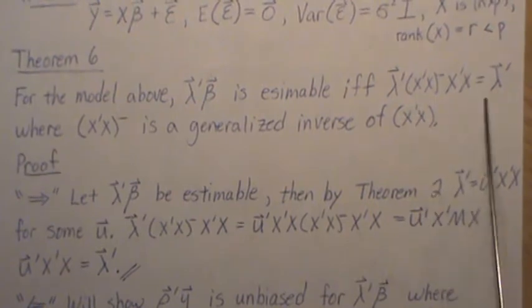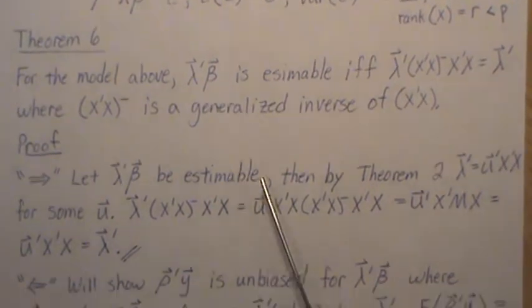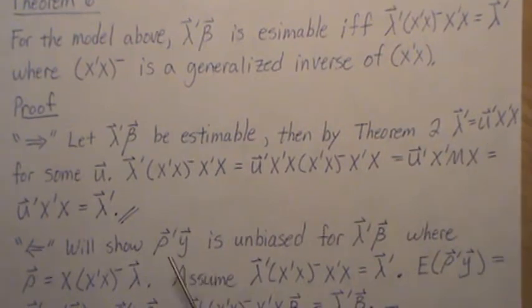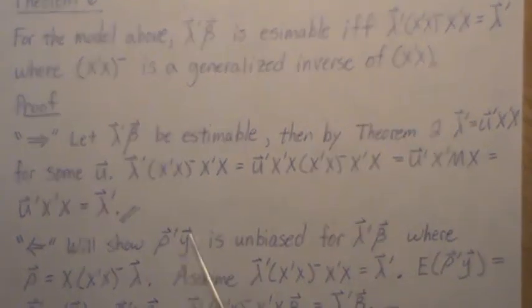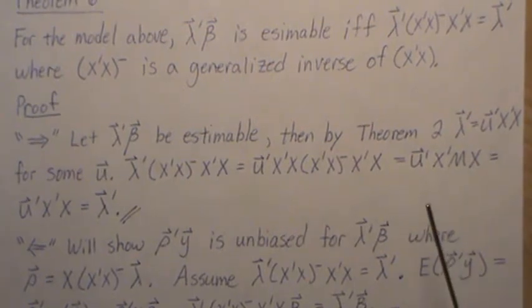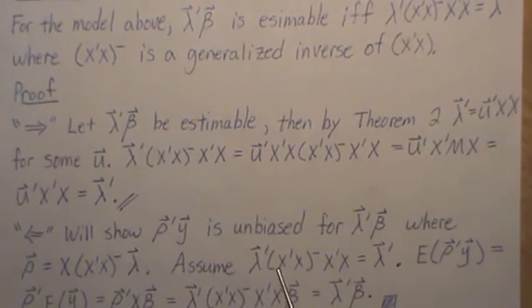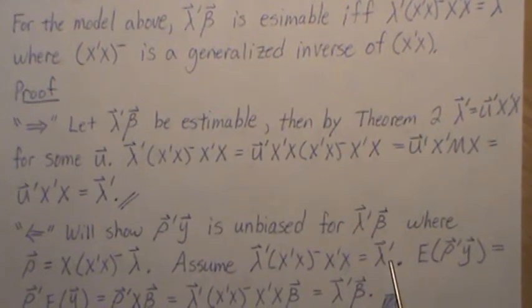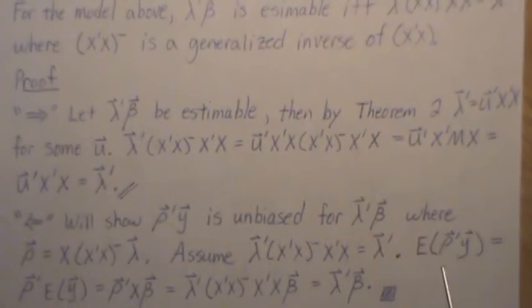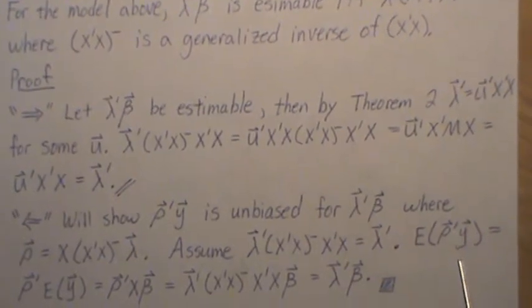Let's assume this is true and show that it's estimable. Now how do you show something's estimable? It means that there's an unbiased linear combination of the y's that equals lambda transpose beta. That's the definition of estimability. So that's what we need to show. So let's assume this piece is true, which is the second half of the theorem.